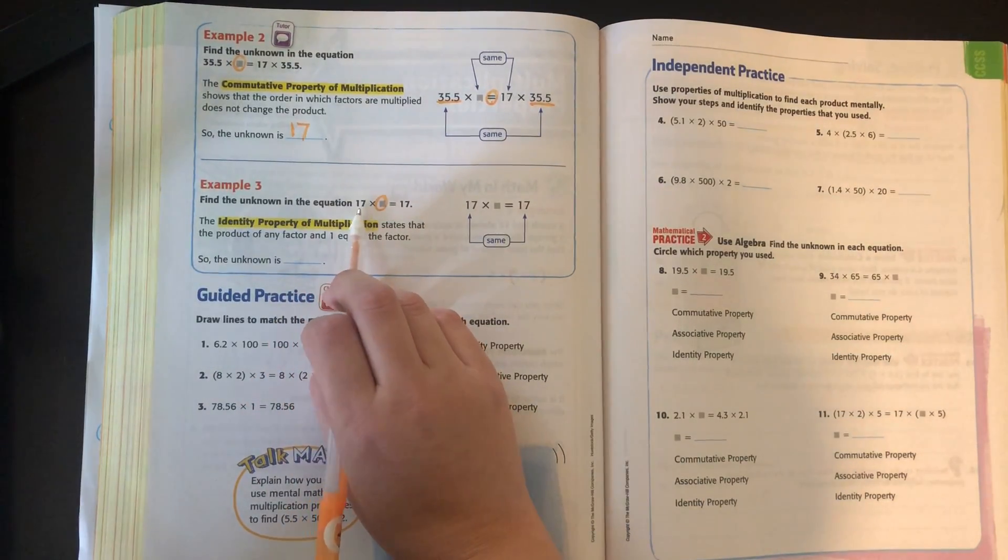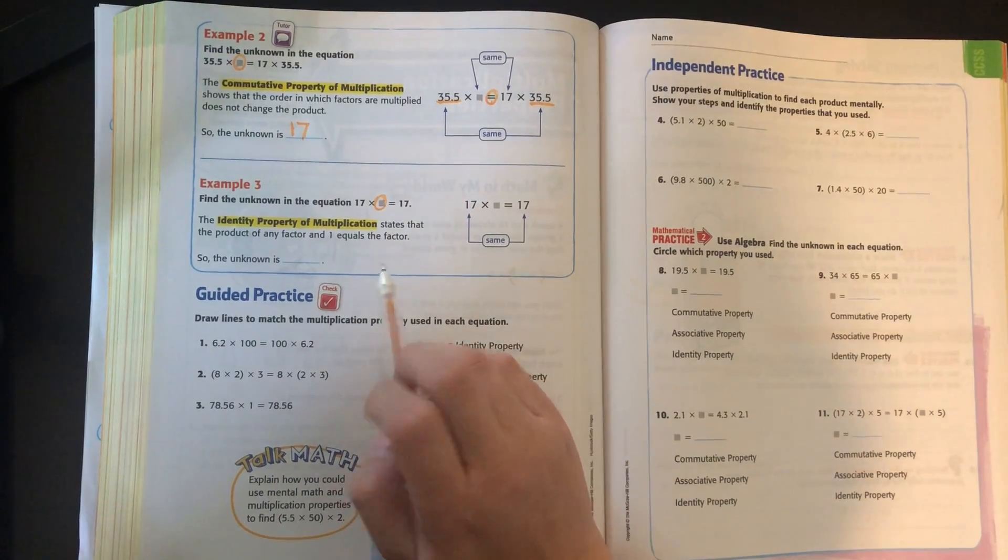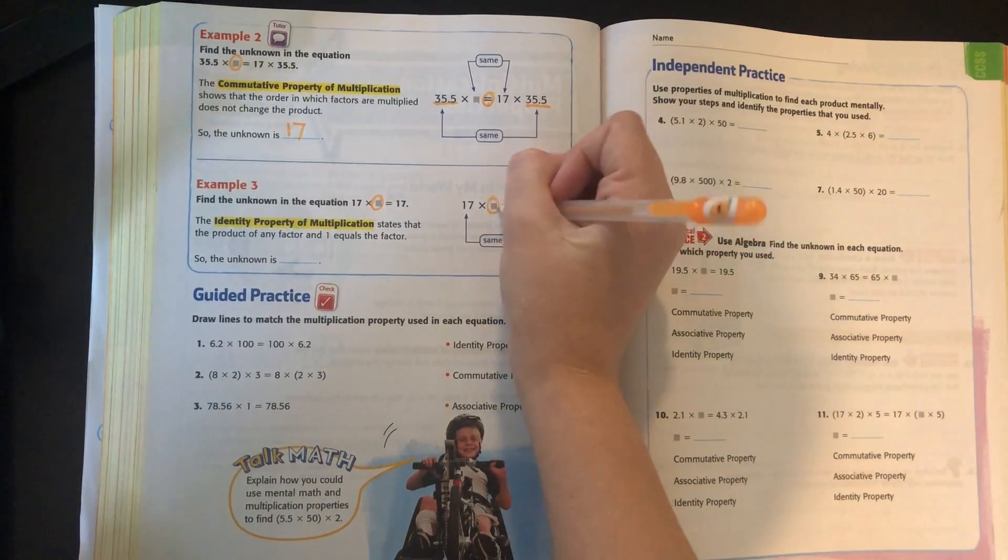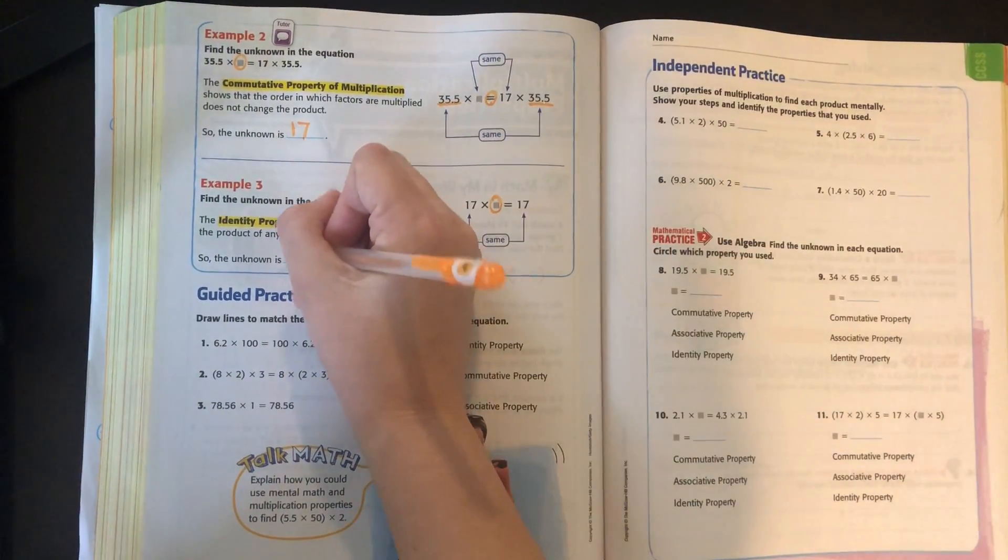So in order for these two numbers, 17 and 17 to be the same, this number, our unknown, has to be one.